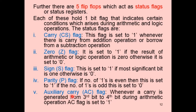The next flag is the auxiliary carry flag. As the name indicates, it is a carry flag: whenever a carry is generated from the third bit to the fourth bit, the auxiliary carry flag is set to 1. If there is no carry from the third bit to the fourth bit, it is set to 0.